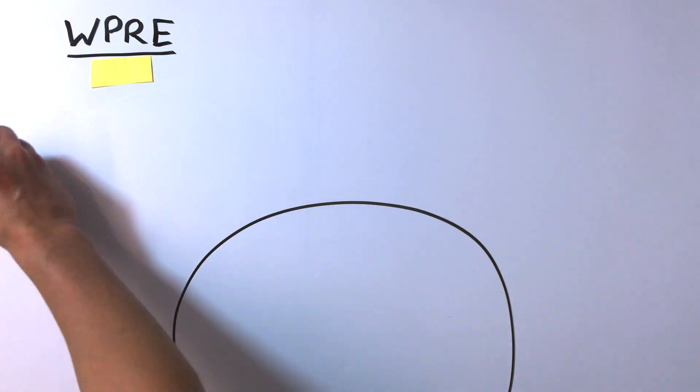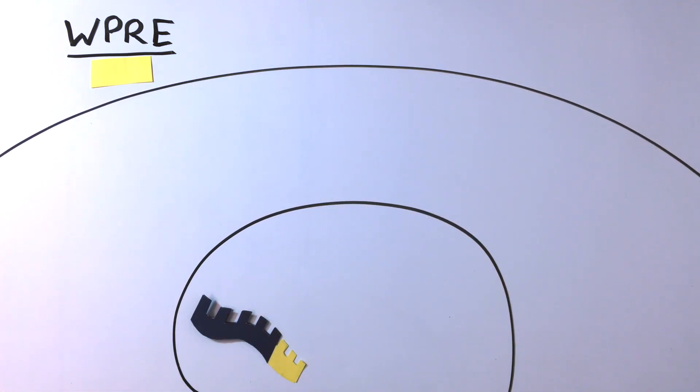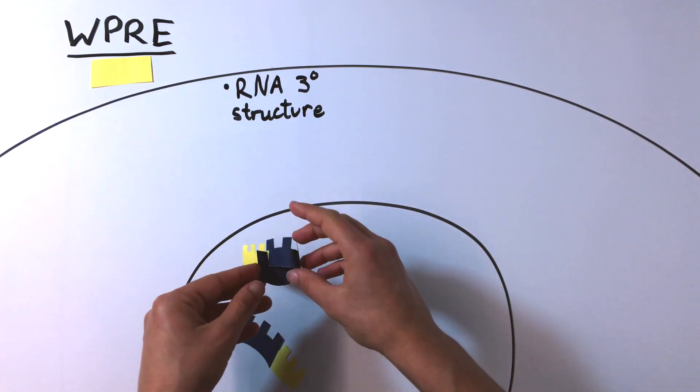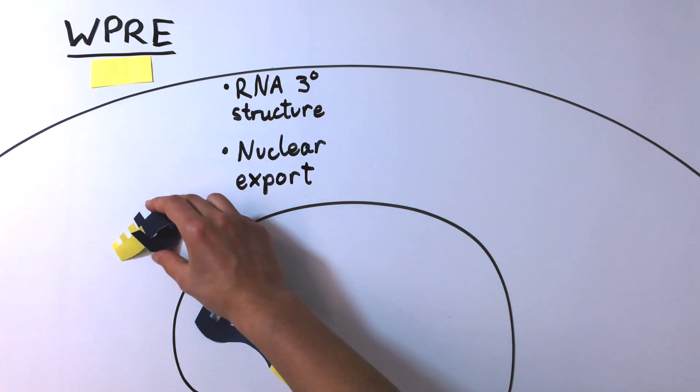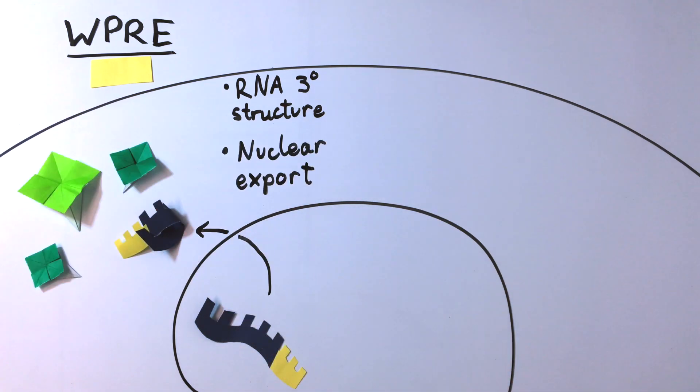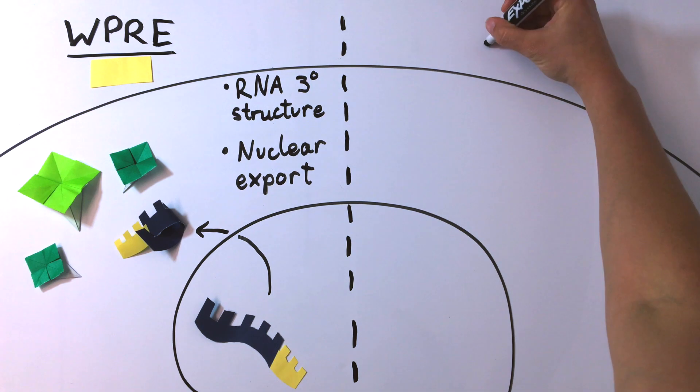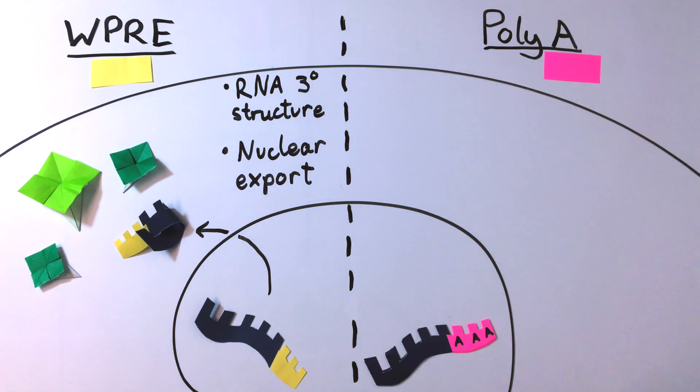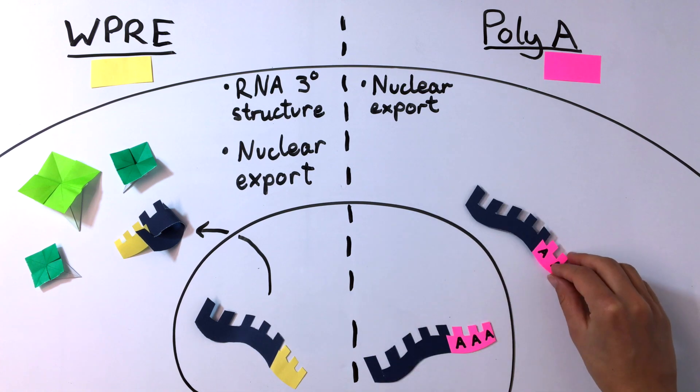The WPRE element helps the transcribed RNA form a tertiary structure and aids in nuclear export. The polyA sequence creates a tail of adenosine nucleotides on the mRNA. This also aids in nuclear export.